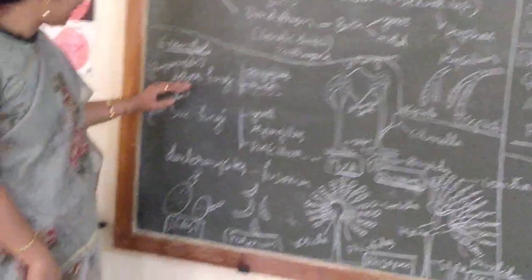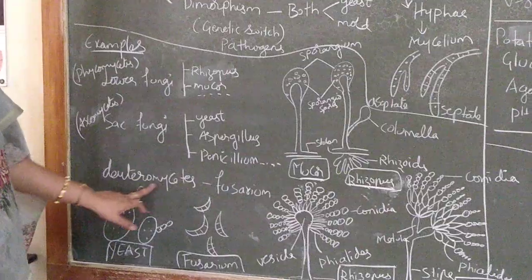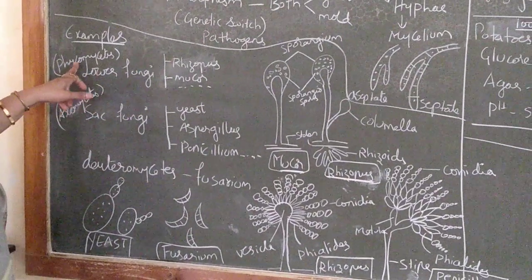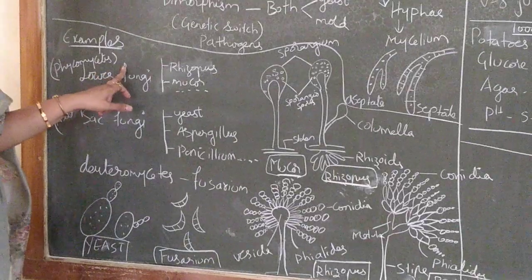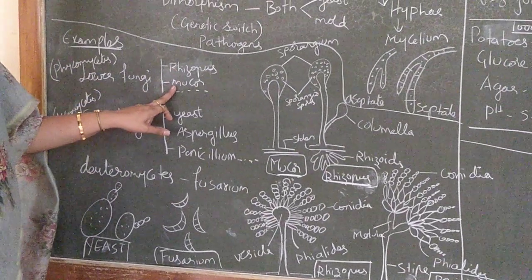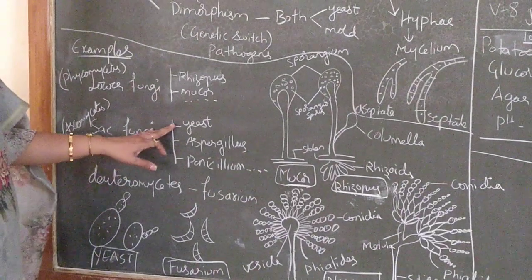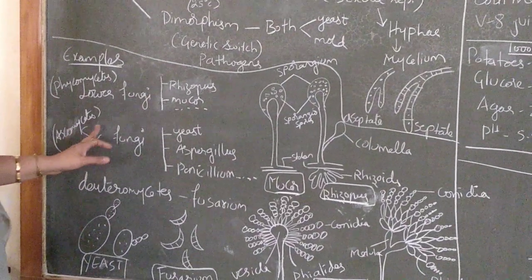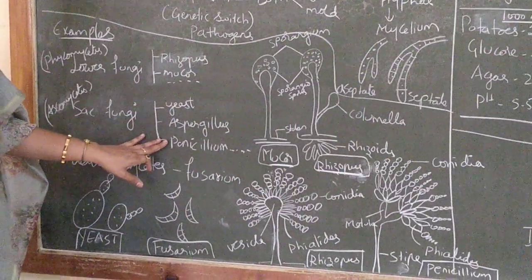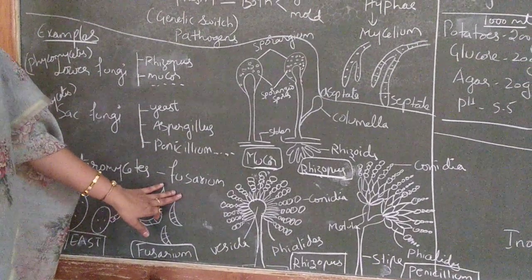Fungi are basically divided into lower fungi, sac fungi, and deuteromycetes. Lower fungi are known as phycomycetes; good examples include Rhizopus and Mucor. Sac fungi include ascomycetes, with examples like yeast, Aspergillus, and Penicillium. Coming to deuteromycetes, a good example is Fusarium.